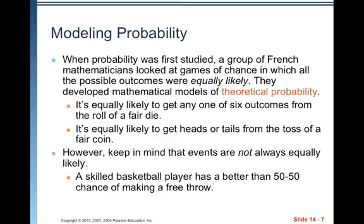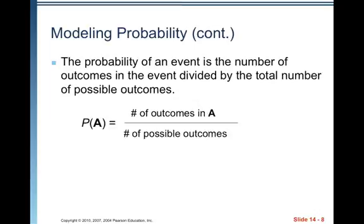It's equally likely to get any one of the six outcomes from the roll of a fair die — die is the singular for dice. It's equally likely to get heads or tails from the toss of a fair coin. However, keep in mind that events are not always equally likely: a skilled basketball player has a better than 50/50 chance of making a free throw — maybe 90% of the time they make it and only 10% of the time they miss. The probability of an event is the number of outcomes in the event divided by the total number of possible outcomes: P(A) = number of outcomes in A divided by the number of possible outcomes.